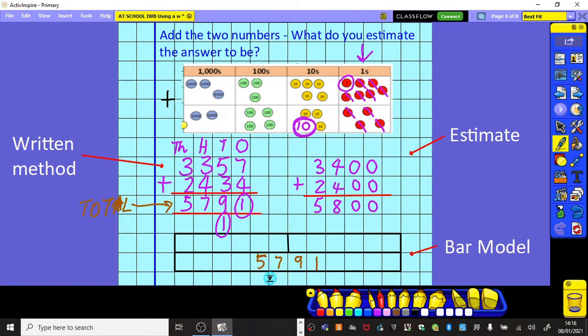And then it doesn't necessarily matter which way round I write these two numbers. Sometimes we wouldn't cut the top bar in the middle. We'd have one of the sections look slightly smaller. But I haven't done that on this occasion. So, we've got 2,434. And adding to that 2,434 is 3,357. So, I can see the 2 bars added together make the long bar. In other words, the 2 top numbers make the total underneath.